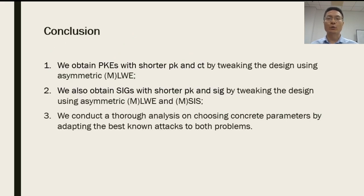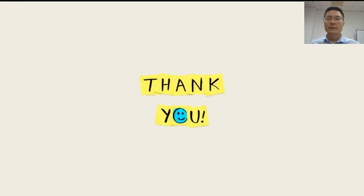Here is a short conclusion. We obtain public key encryptions with shorter public key and ciphertexts by tweaking the design using asymmetric MLWE. We also obtain signature schemes with shorter public key and signatures by tweaking the design using asymmetric MLWE and MSIS. We conduct a thorough analysis on choosing concrete parameters by adapting the best known attacks to both problems. This is the end of this talk. Thanks for your attention.